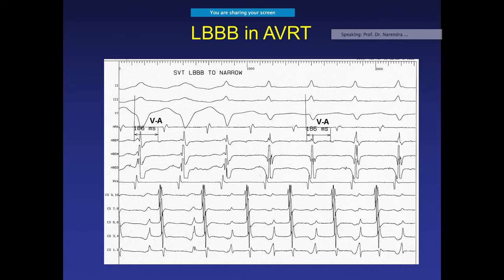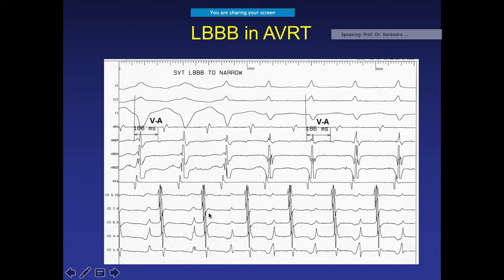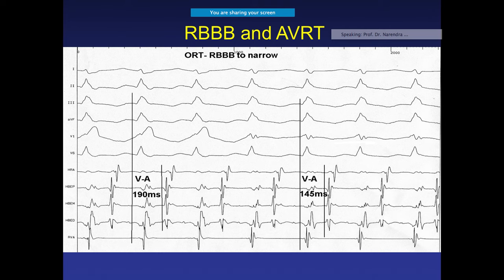Looking at the ECG — if there is an accessory pathway-mediated tachycardia and the patient already has a bundle branch block — the ECG shows a wide QRS with tachycardia. To determine it is not ventricular tachycardia, you look carefully: the V-A relationship is dissociated, meaning ventricular conduction is completely independent of atrial conduction, which identifies this as ventricular tachycardia.